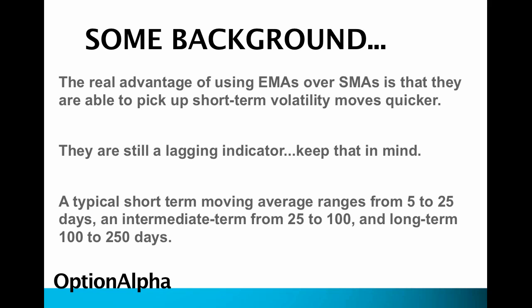The real advantage of using Exponentials over simple moving averages is that they're going to pick up short-term volatility and quicker moves. With a simple moving average, you don't get as much movement in the indicator because it lags the market and factors in today's close or yesterday's close as just another data point. But with Exponential Moving Averages, today's move is factored in at a much higher rate or percentage of the overall average.